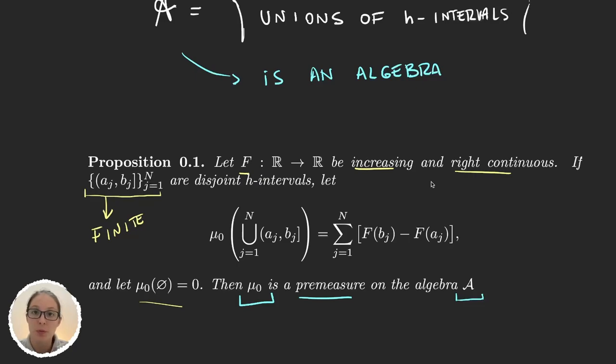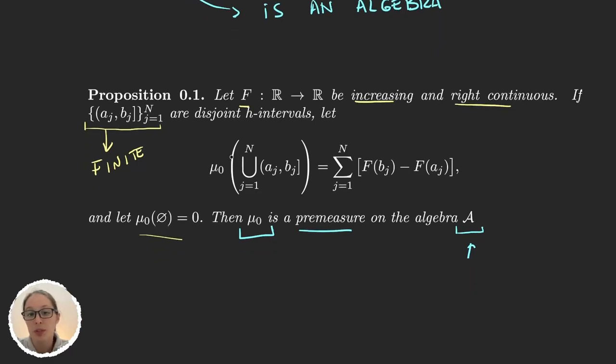So the proposition gives us a premeasure. From the premeasure we can define an outer measure. We can then use that outer measure to define a measure. So basically, because this premeasure is defined with a function F, then we can say that the function is defining the measure. Because it can be proven that given a function, the measure defined with all these things I just said is unique. And obviously from Carathéodory's theorem, we know that that measure that exists with all this construction is complete.